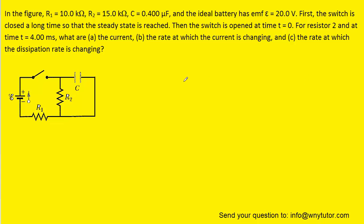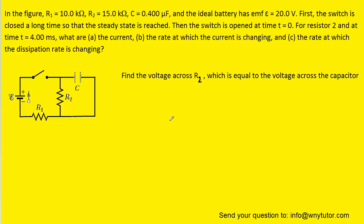Our first step in solving this problem is to note that after a long period of time, the voltage across the capacitor will be equal to the voltage across the resistor marked R2. The reason is that these two circuit elements are in parallel with one another. So our goal becomes to find the voltage across R2, which is equal to the voltage across the capacitor.